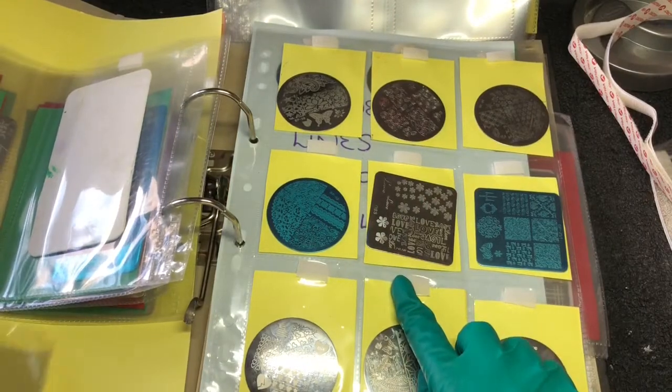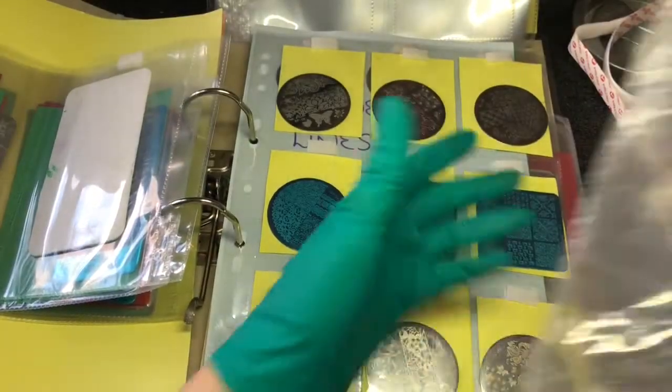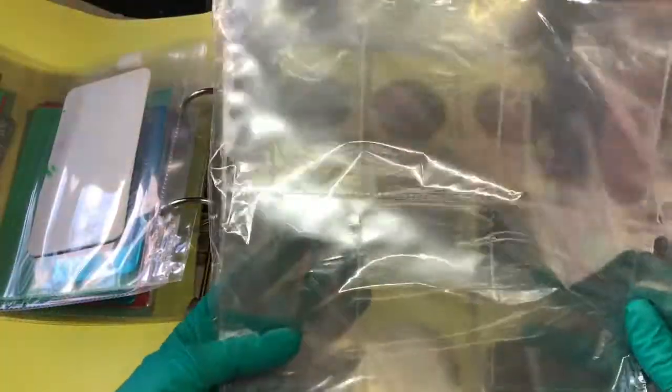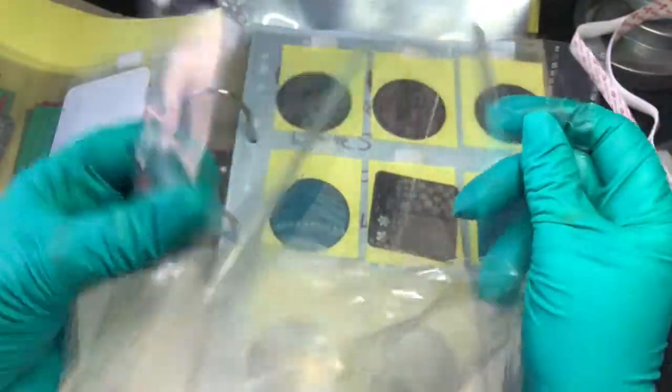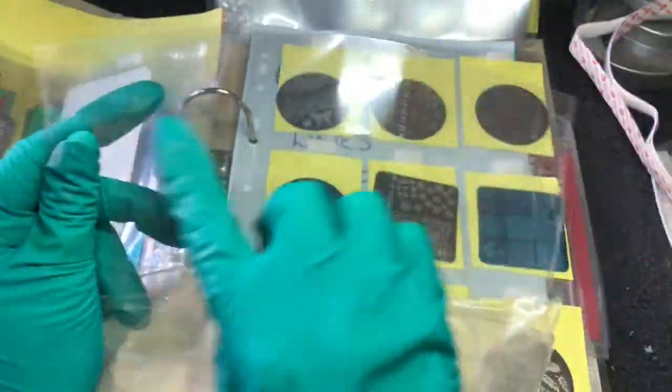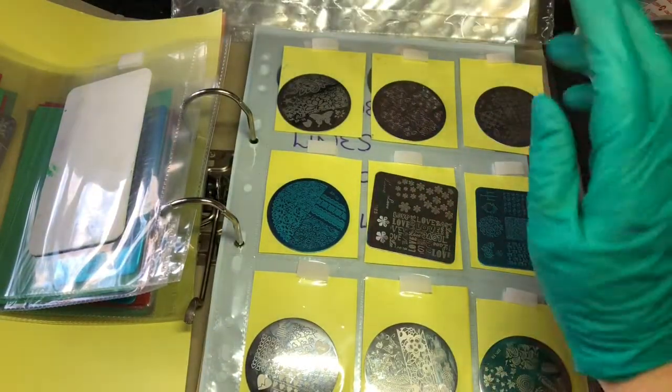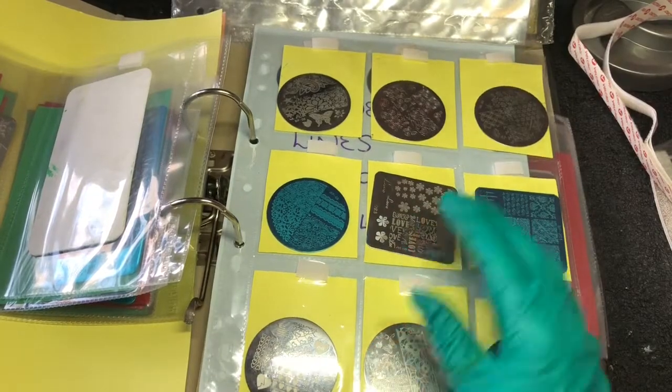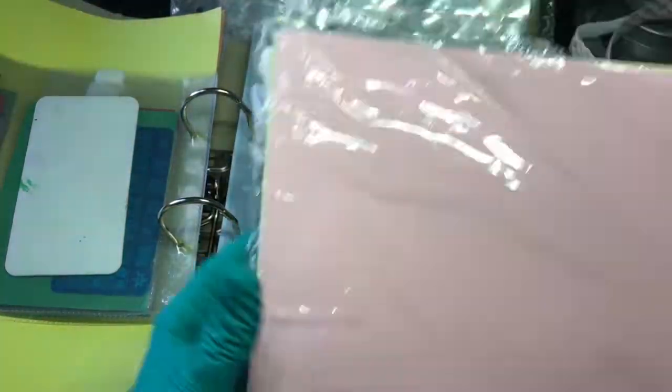Then I get these ones which are baseball card or Pokemon card holders. You get nine slots in there. I get these for the circles and the smaller squares.